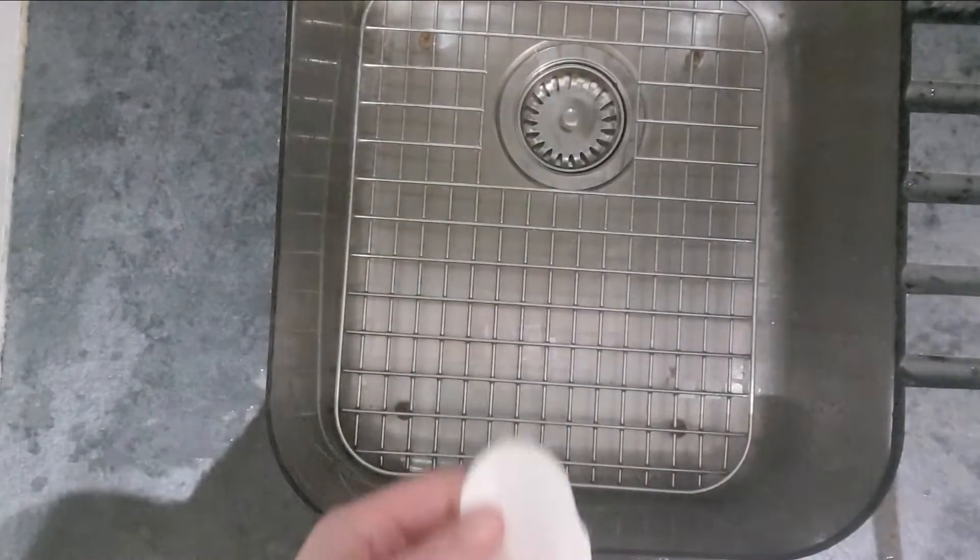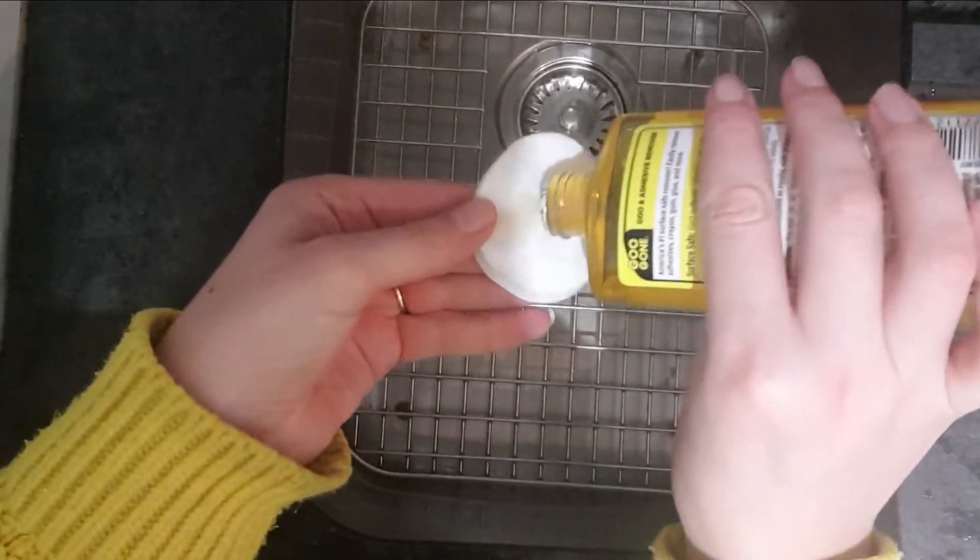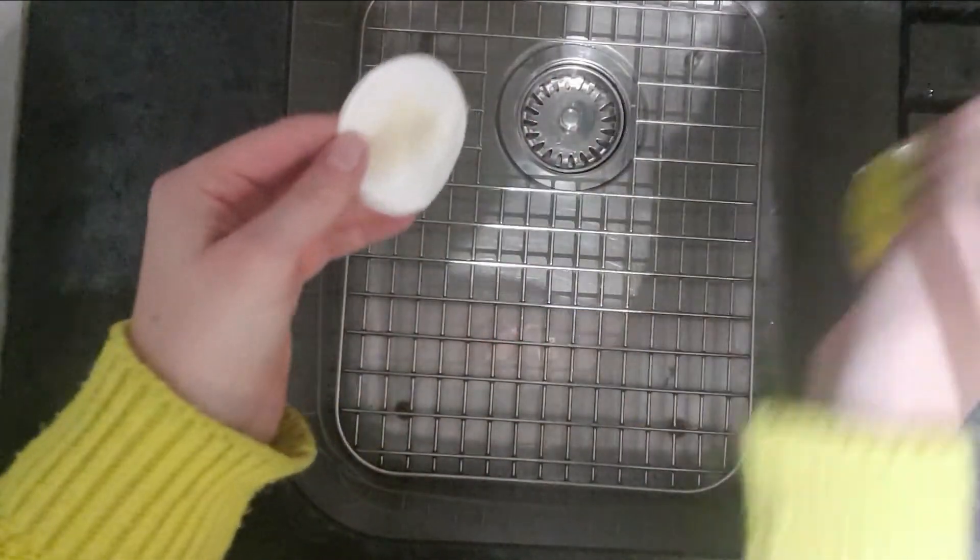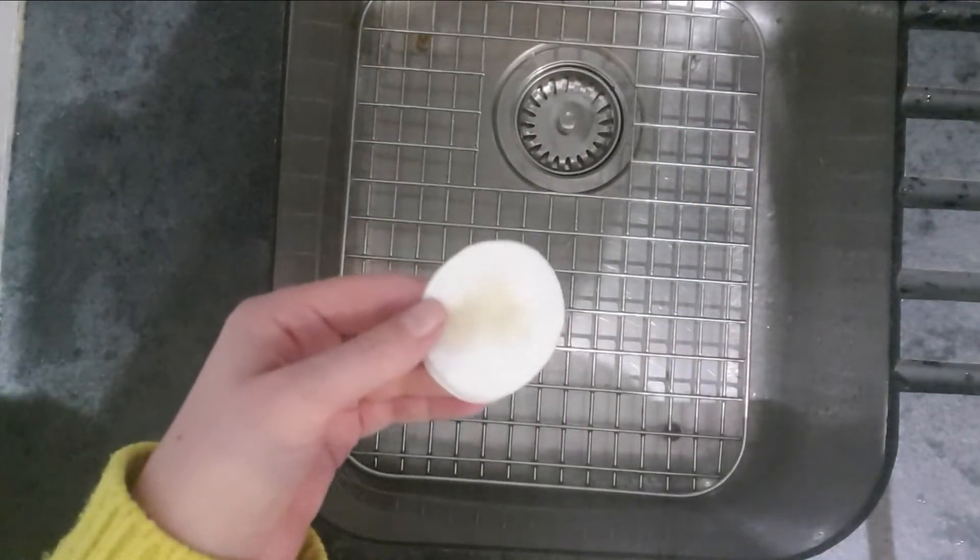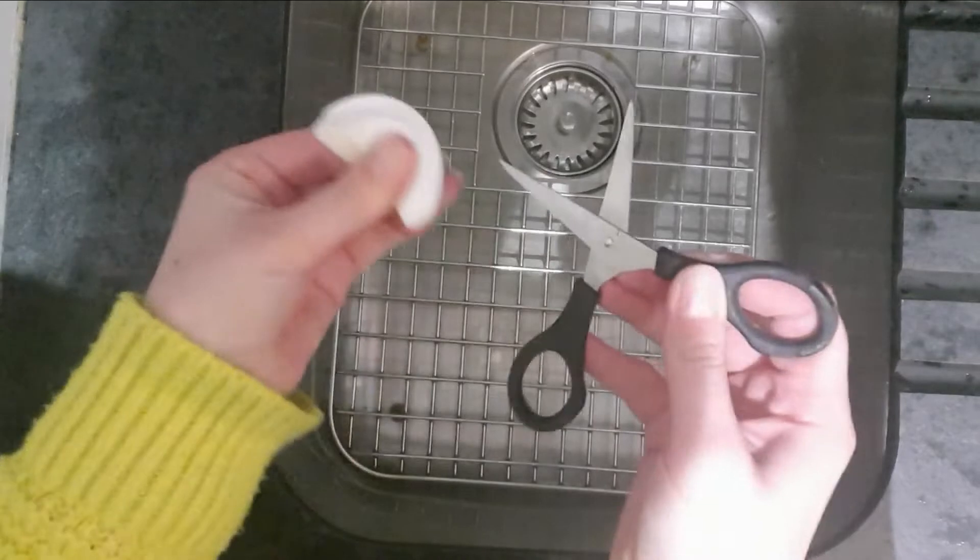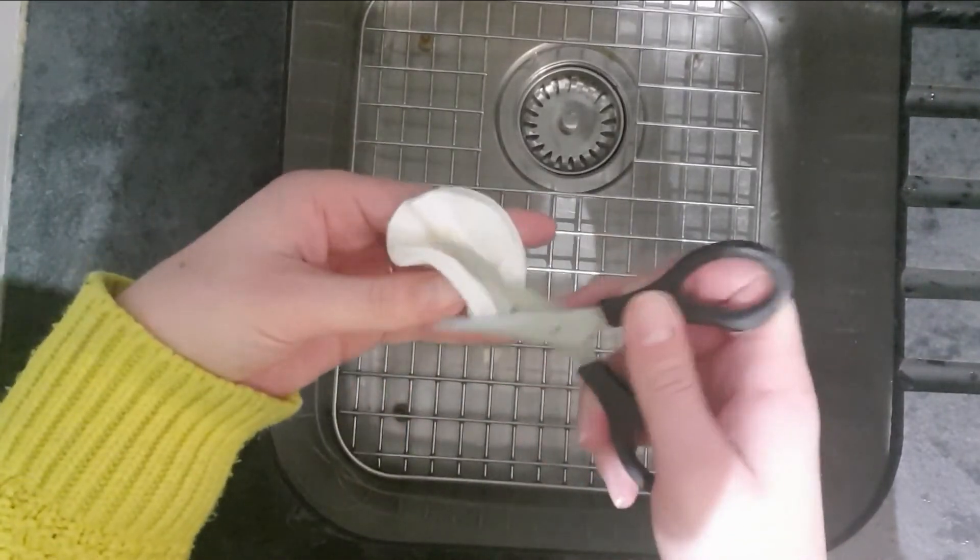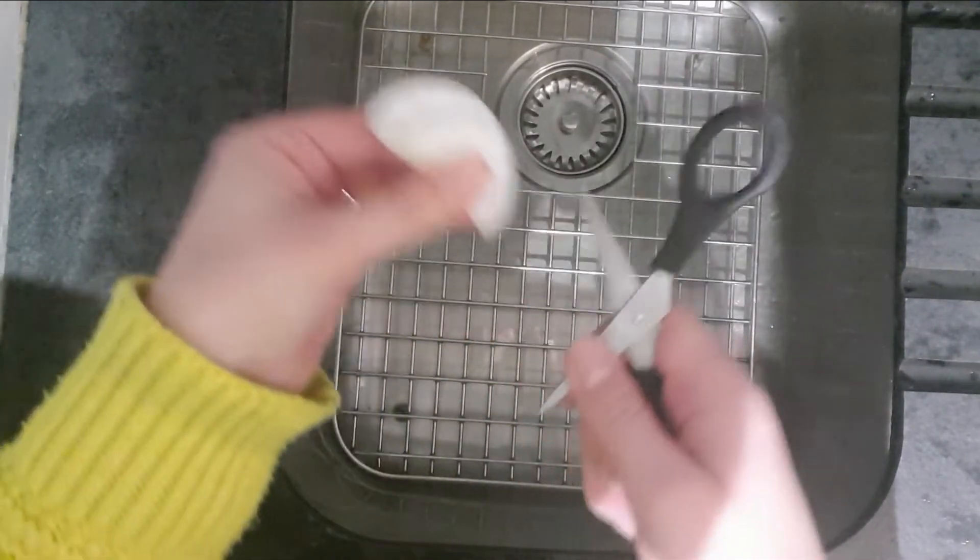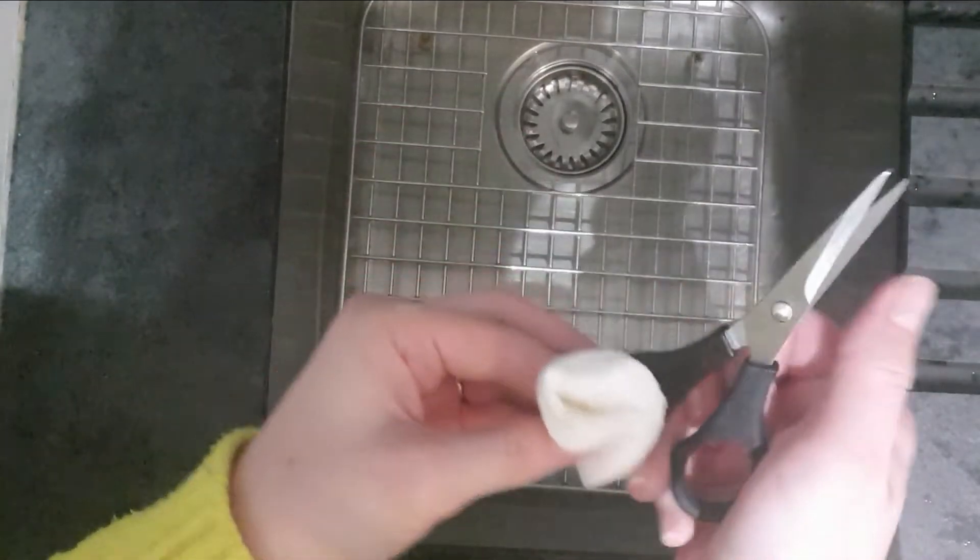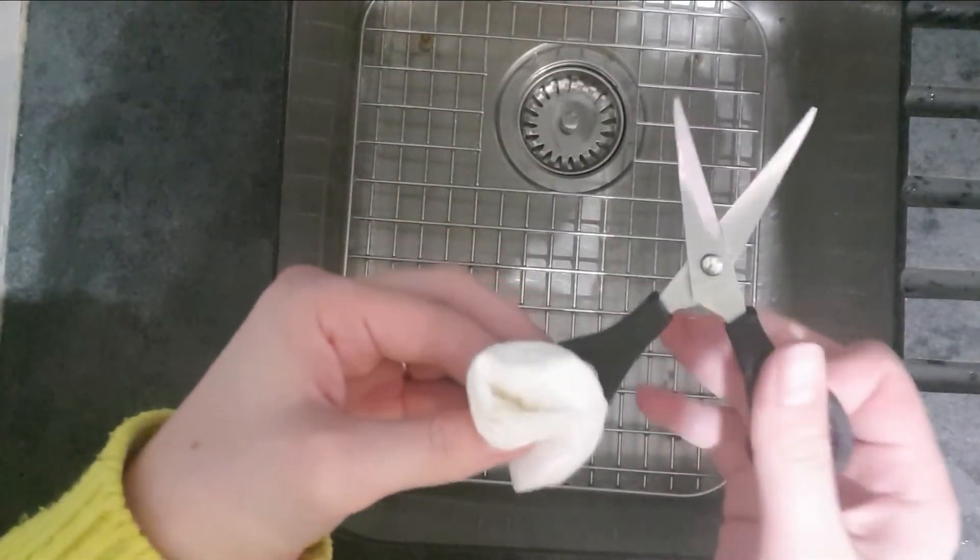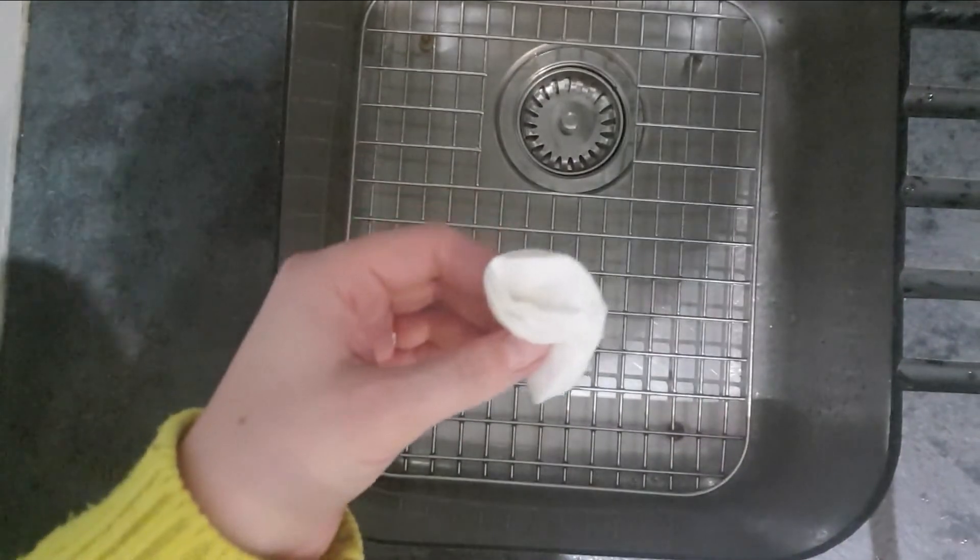And then finally to clean my scissors because sometimes they get a bit sticky from people using them for tape and stuff like that. So I have some of this goo gone and I just give them a little wipe. This one pad will do all my sets of scissors that I have for my classes, and I'm just wiping the blades with that and it just makes them nice and clean ready for next time.